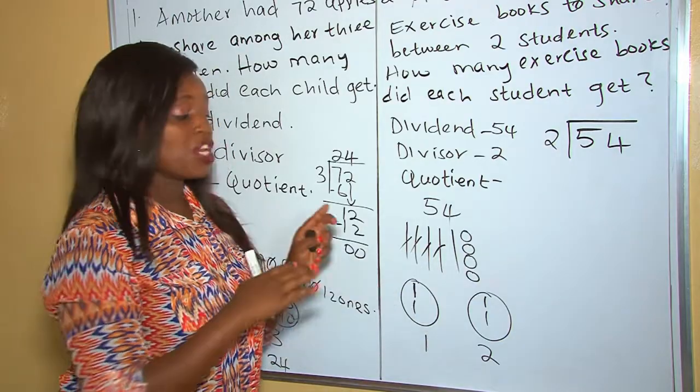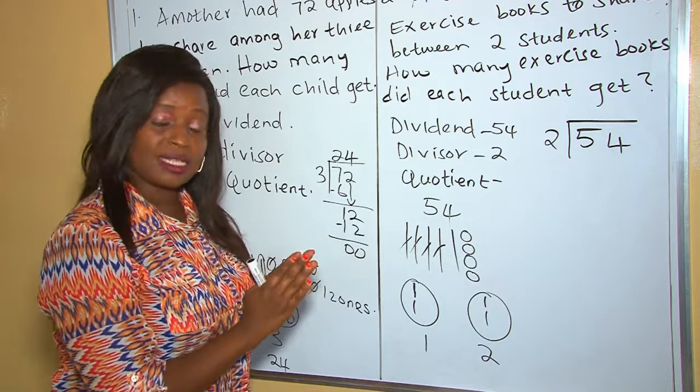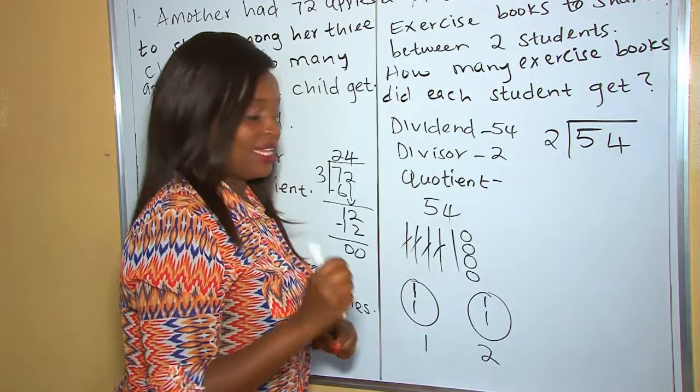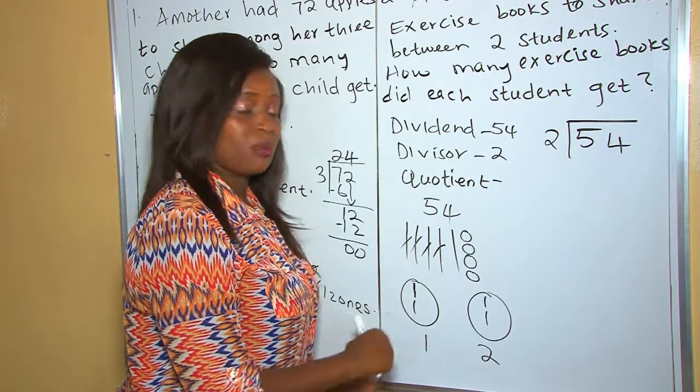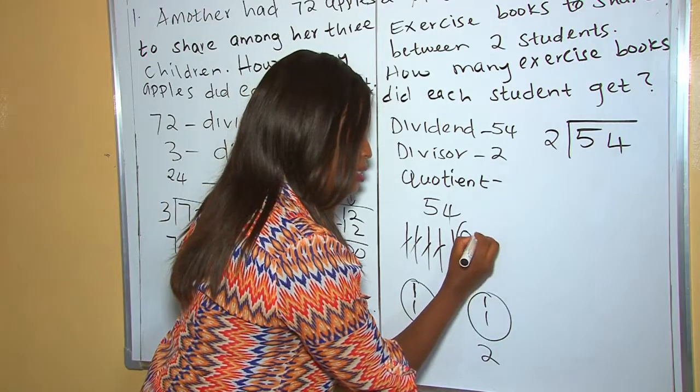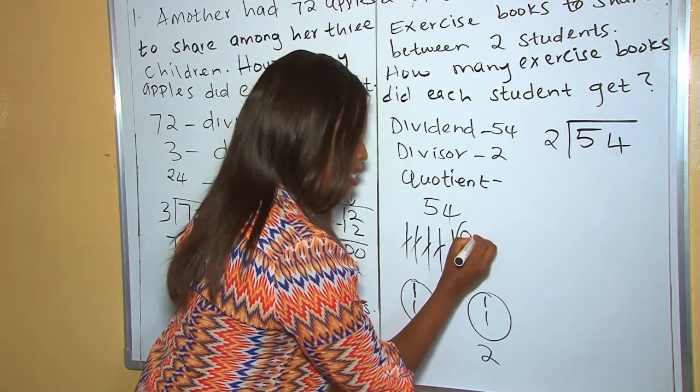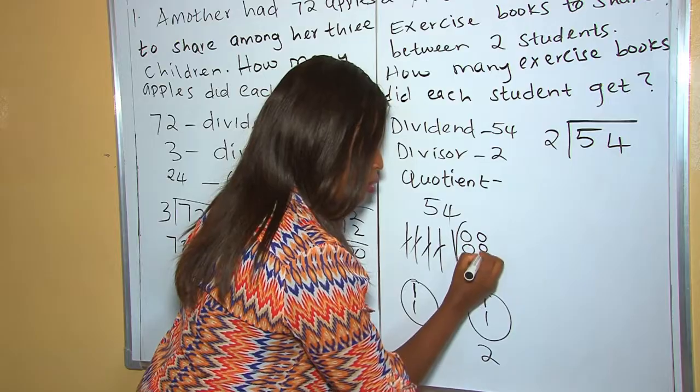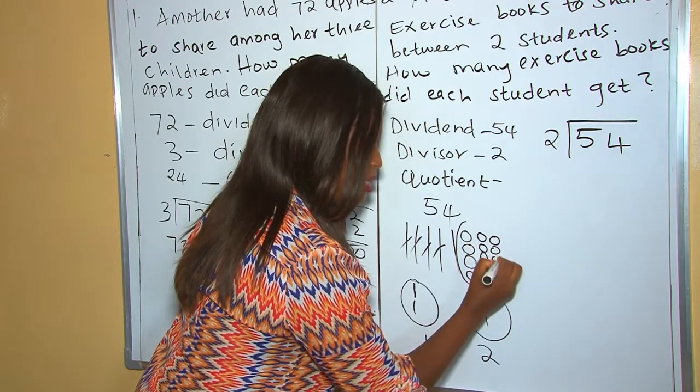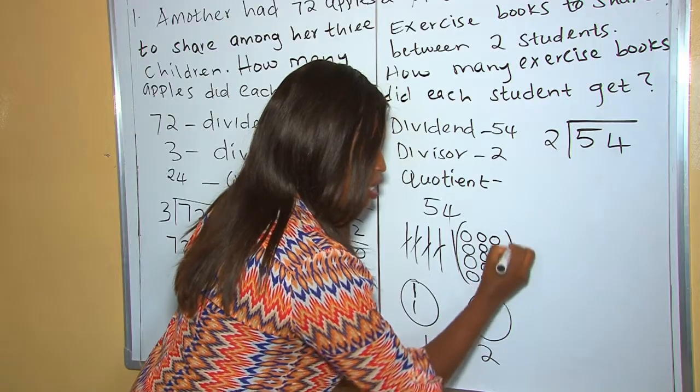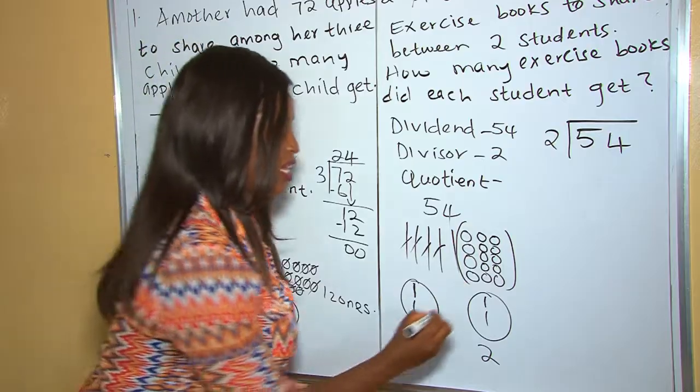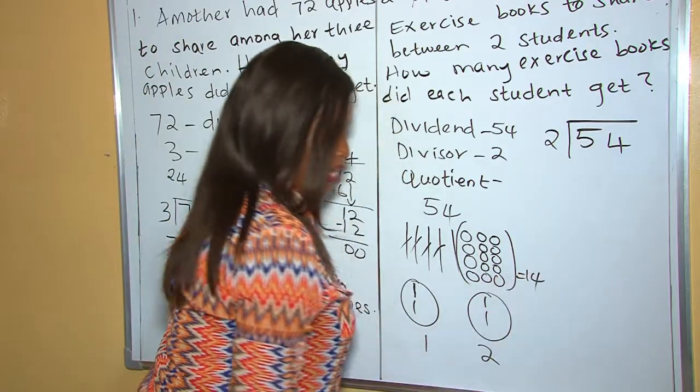This one ten, now we regroup it into ones. And how many ones makes one ten? There are 10 ones that makes one ten. So we put our 10 ones here: 1, 2, 3, 4, 5, 6, 7, 8, 9, 10. So now, 10 ones plus 4 ones, we get 14 ones.